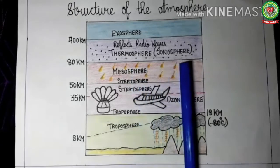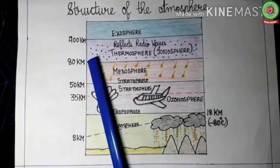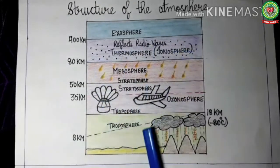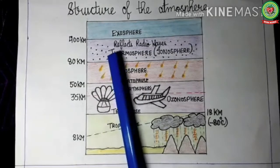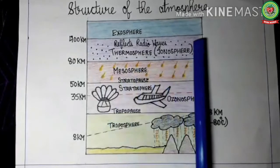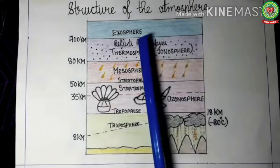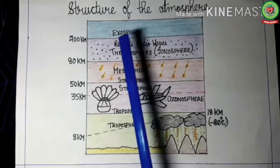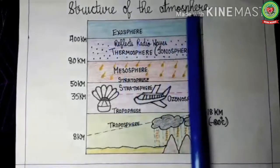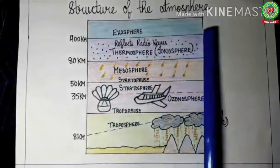The next layer is thermosphere or ionosphere. The ionosphere has ions, which are electrically charged particles, very important for radio broadcasting — radio waves sent from the earth are deflected back by the ions present in the ionosphere. The last layer is exosphere. We know very little about this layer. It has light gases like helium and hydrogen.